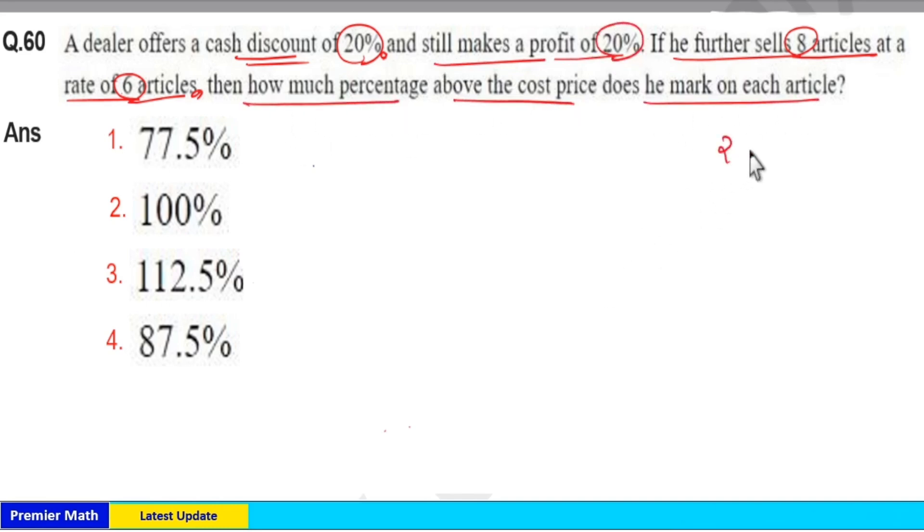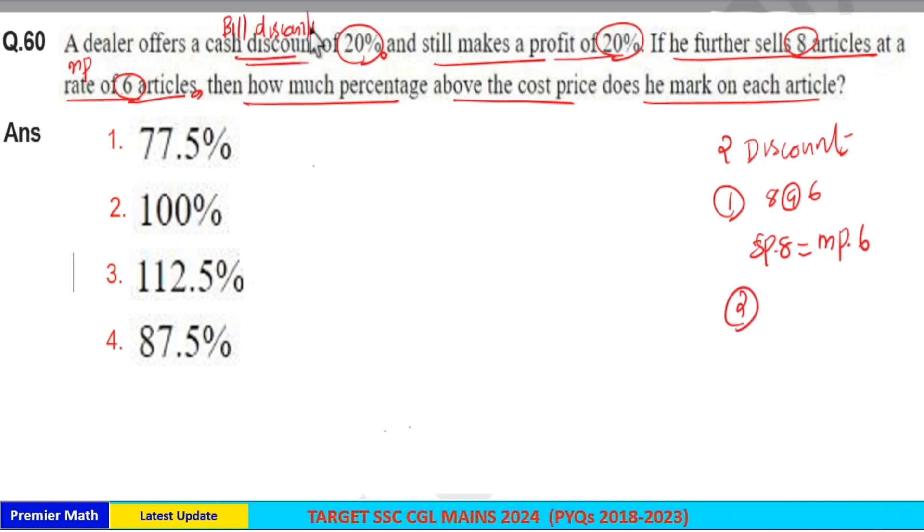Here there are 2 discounts. First one is he sells 8 articles at the rate of 6 articles, which means the selling price of 8 articles is same as the marked price of 6 articles. Now second discount is cash discount, which means bill discount that is 20% discount on this bill amount.